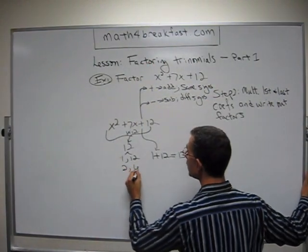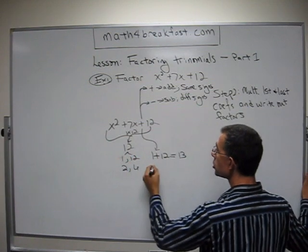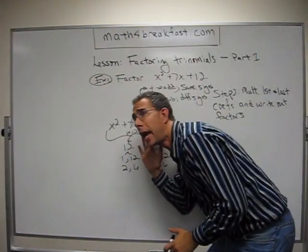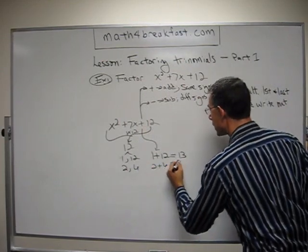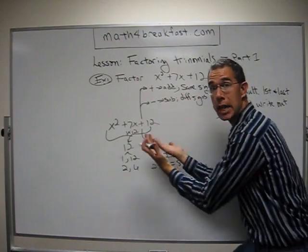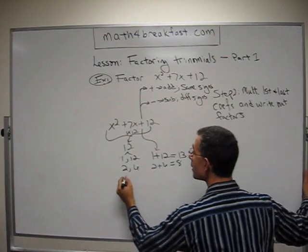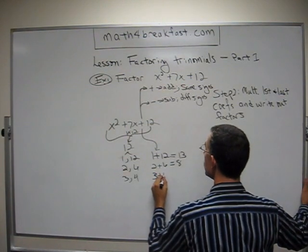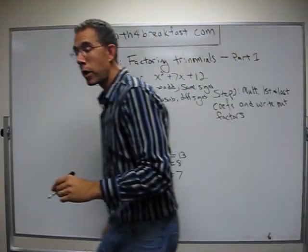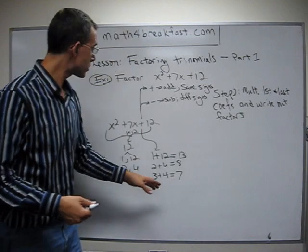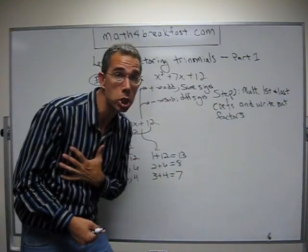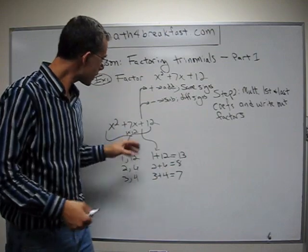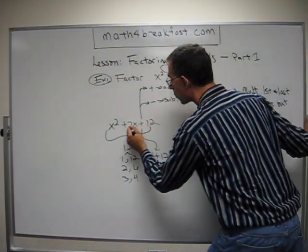It means I need to try again. 2 and 6 multiply to give me 12. So 2 plus 6 equals 8. And again, 8 — no connection, no 8's here. Move on. Finally, we have 3 and 4. We've run out of factors, and we're going to be sure those are the right two factors because 3 plus 4 equals 7. And at this point you're almost excited, because the 7 and the 7 match up — that's the one I want, it matches.